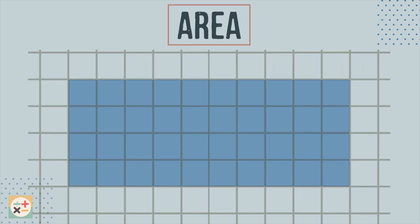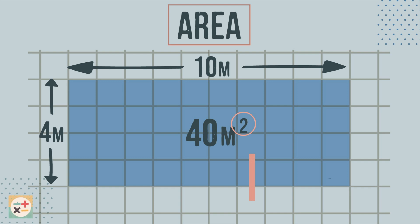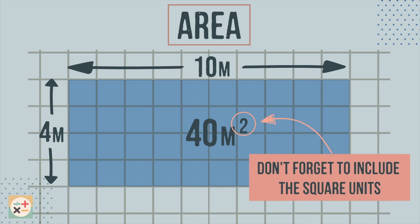Let's have a look at this rectangle. It has a length of 10 meters and a width of 4 meters. If we multiply the length times the width, we get 40 square meters. Don't forget to include the squared units when noting down an area.